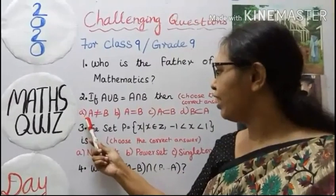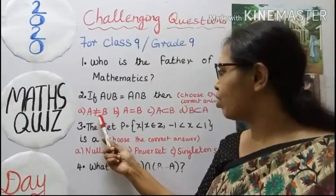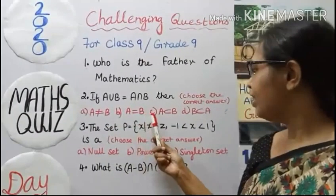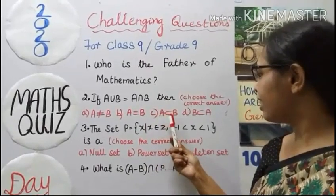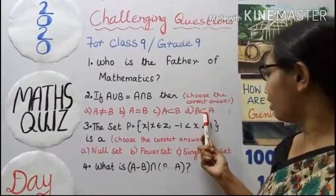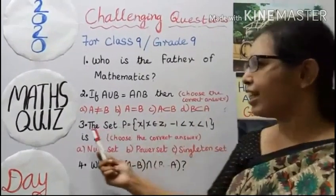Option A: A does not equal to B. Option B: A equal to B. Option C: A is a subset of B. Option D: B is a subset of A. Third question.